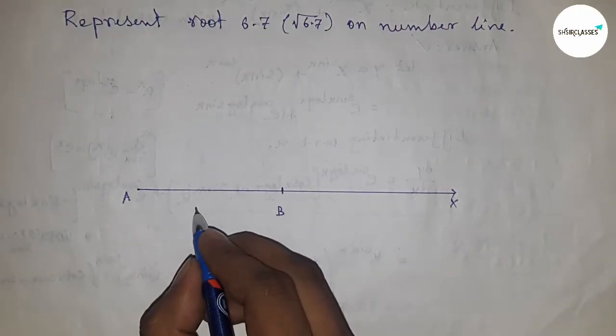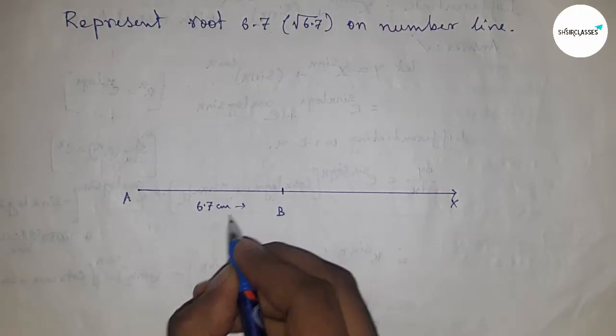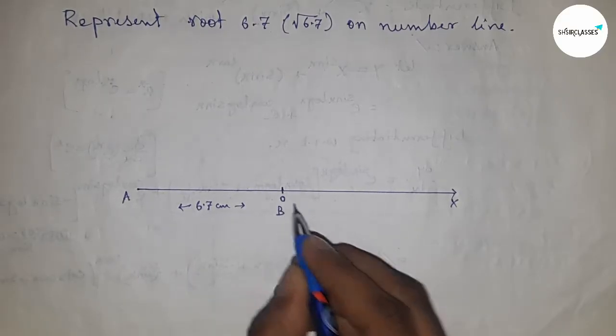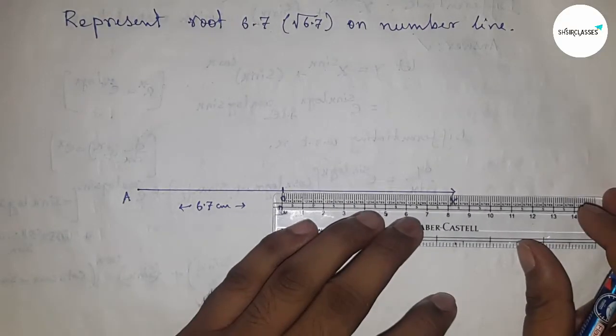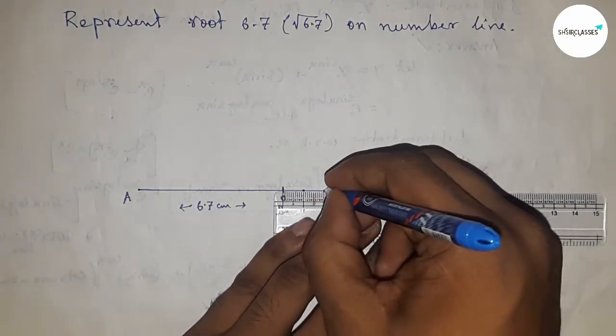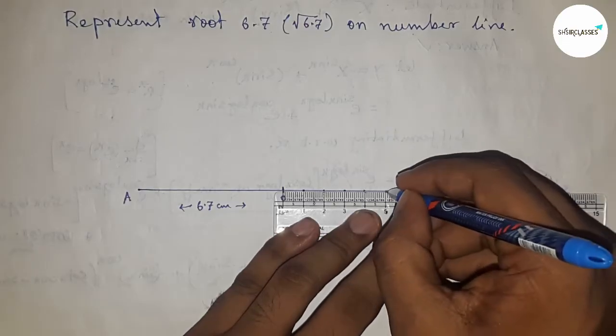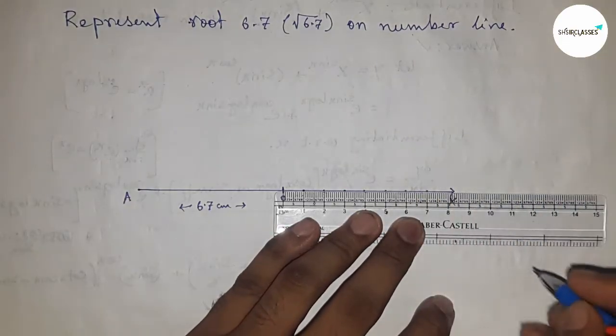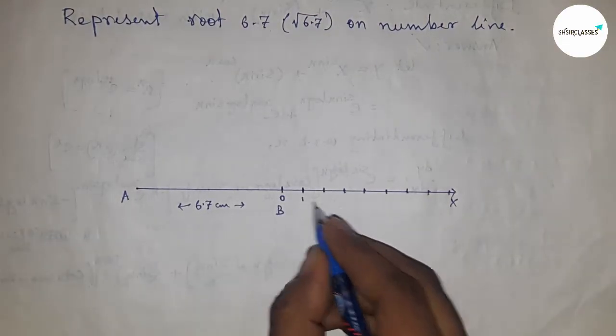Next, mark all the numbers on the line from B to X. Mark the numbers: 1, 2, 3, 4, 5, 6, 7, and so on. This is point C at position 7.